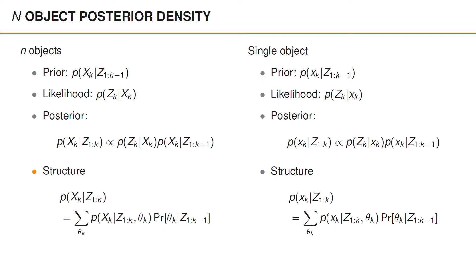And for tracking n-objects, we're going to see that we have the same type of structure for the posterior density.